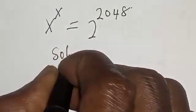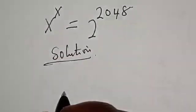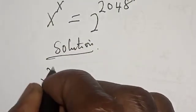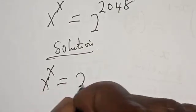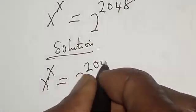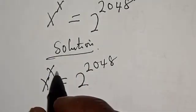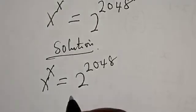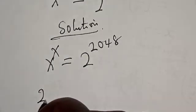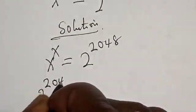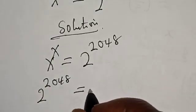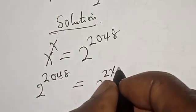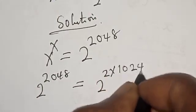Solution. The given equation is s raised to power s is equal to 2 raised to power 2048. We don't know the value of s, so we have to work with this. That is, 2 raised to power 2048 is the same thing as 2 raised to power 2 multiplied by 1024.